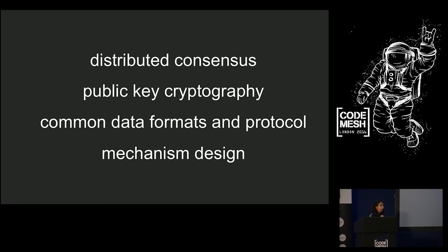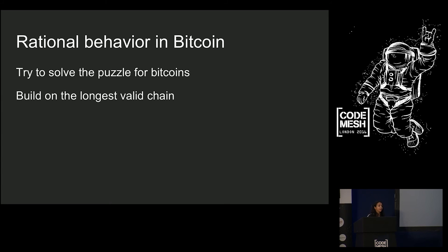So, remember those three things before that are part of blockchains? Distributed consensus, public key cryptography, common data formats and protocol. Well, let's add one more really interesting piece to this puzzle. Mechanism design. So, mechanism design is this part of game theory. And in mechanism design, you have some goal or outcome that you want to have happen. And you design a game. So, if the participants act rationally, you design a game with an incentive structure. So, if the participants act rationally, you end up with your outcome. So, this is often used in advertising auctions. It's an attempt to try to get people to bid their true value for what they actually value the auction for.